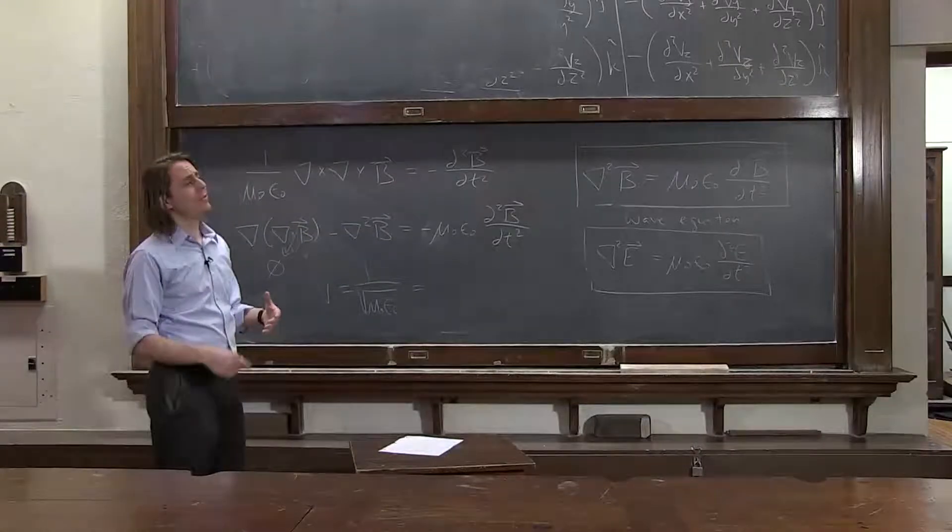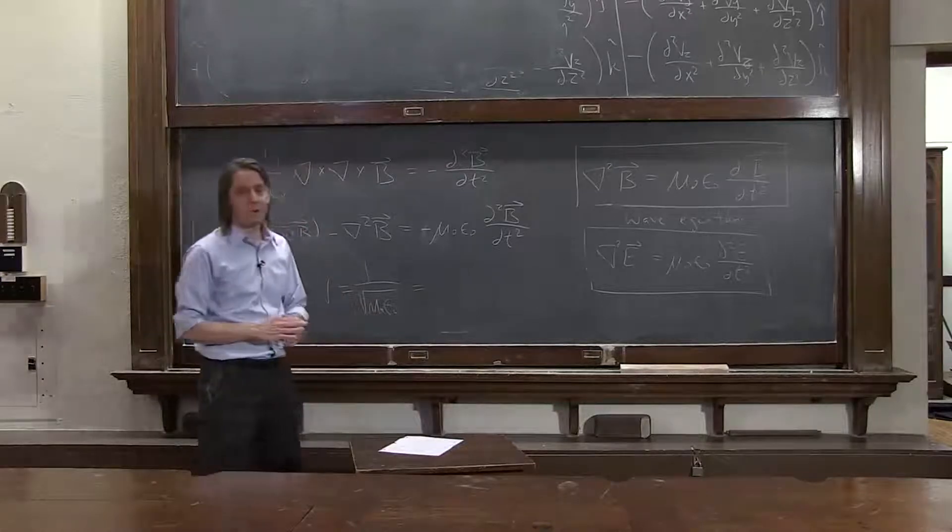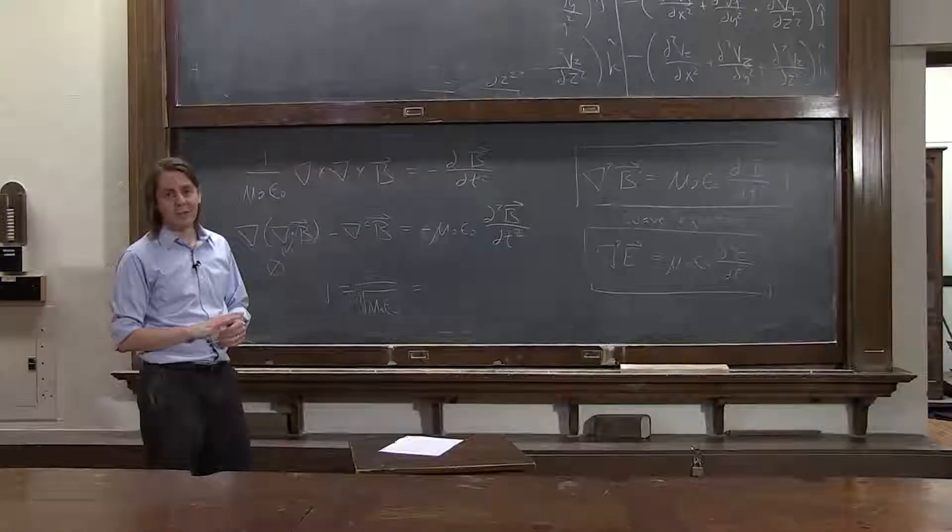But I believe the story is he was on vacation, and he didn't have his notes with him to tell him the exact values for mu naught and epsilon naught. But he realized that's really fast. And there's one very famous wave that goes really fast, and that's light.